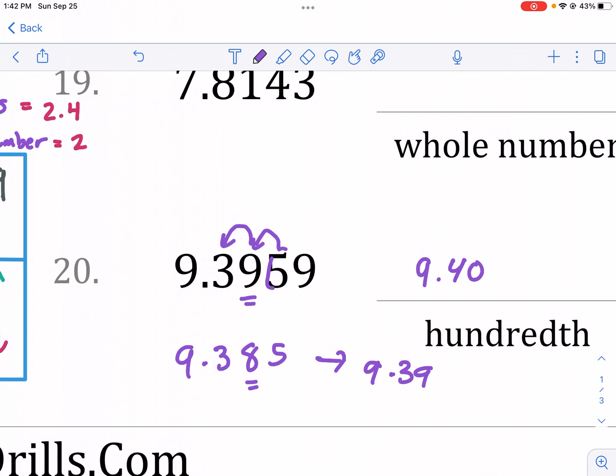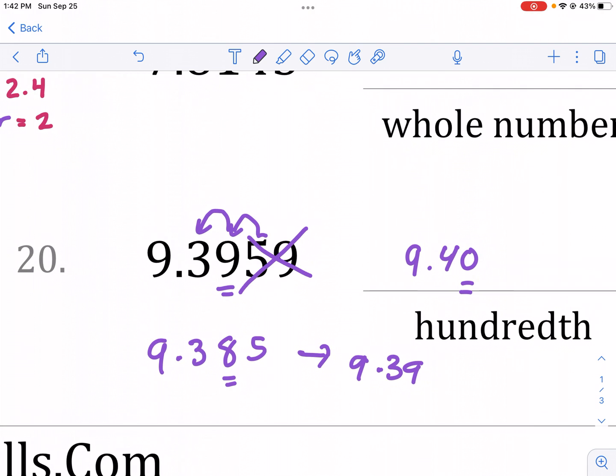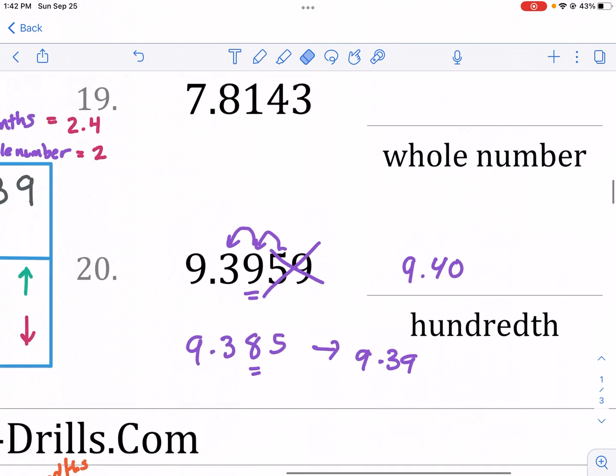So, 9.40. And again, the last digit we should write is that hundredth. We don't care about those other digits past it anymore. And it stays at 9.40.